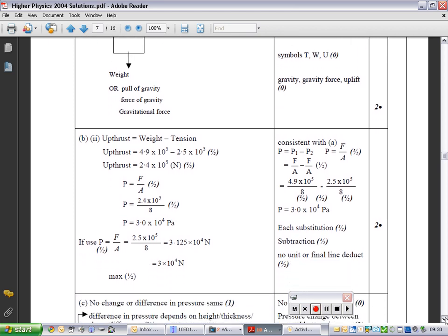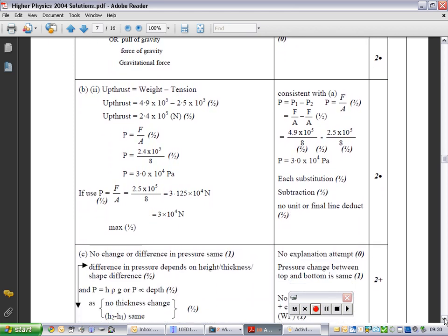Let's go down a bit more. Upthrust equals weight minus tension. Your upthrust should equal 2.4 times 10 to 5 newtons. So, you get half mark for doing a subtraction, half mark for getting the answer, and then pressure is force over area. Plug your numbers in, get the answer, get the units, and you should get your pressure there of 3 times 10 to 4 pascals.